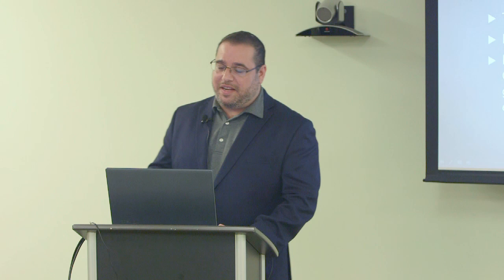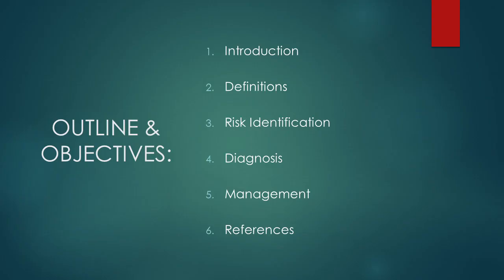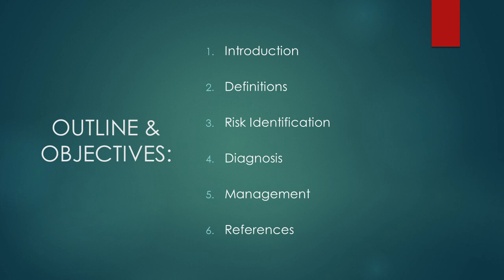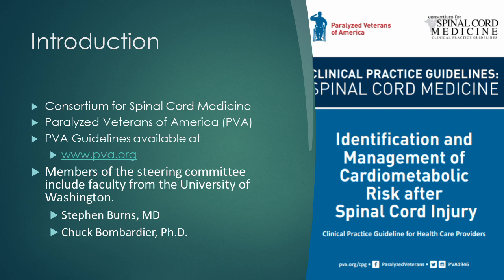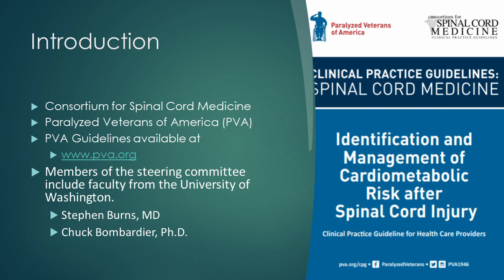Thank you Dr. Hoffman. Today we're going to review cardiometabolic disease and specifically how this impacts individuals with spinal cord injuries. We'll do an introduction to the topic, define specific terms, identify risks for individuals with spinal cord injuries, how we diagnose it, and some ideas about management. The Consortium for Spinal Cord Medicine and the Paralyzed Veterans of America have put together clinical practice guidelines regarding identification and management of cardiometabolic risk following spinal cord injury. You can get a copy at pva.org. Part of the steering committee consists of faculty from the University of Washington.